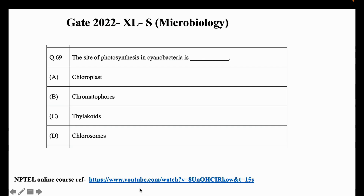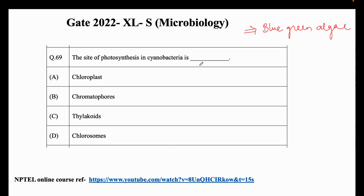Cyanobacteria comes under the phylum Monera. It is a bacteria also commonly known as blue-green algae. Cyanobacteria, along with other phytoplanktons, make about one third of the oxygen supply to the whole planet. So these are photosynthetic organisms.